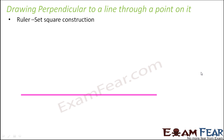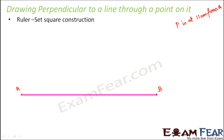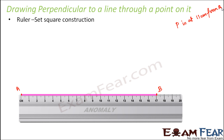First let us look at the ruler and set square construction. Let's say this is the line AB given to you and you need to draw a perpendicular at a point P which is at 11 centimeters from end A. To locate P, first put a ruler exactly along the line segment AB and make a note of 11 centimeters, which is our point P.